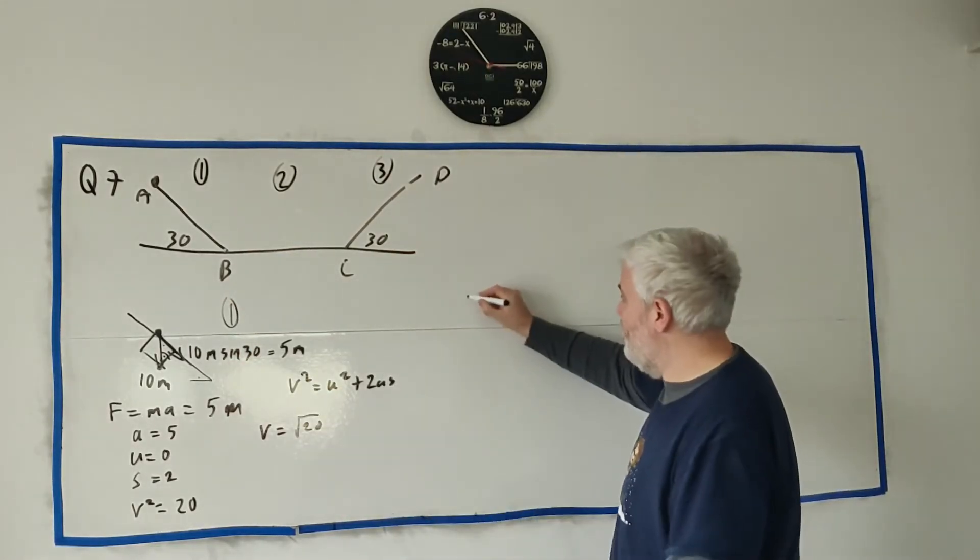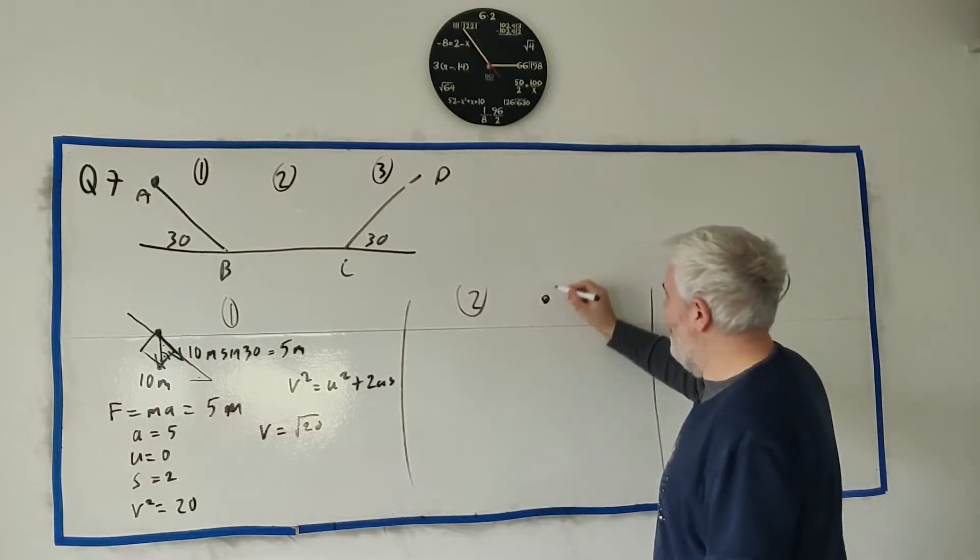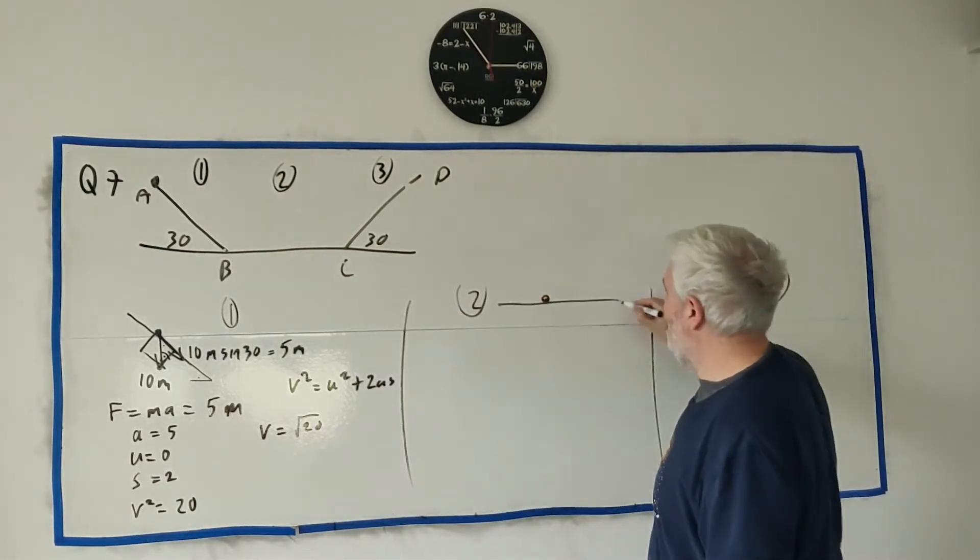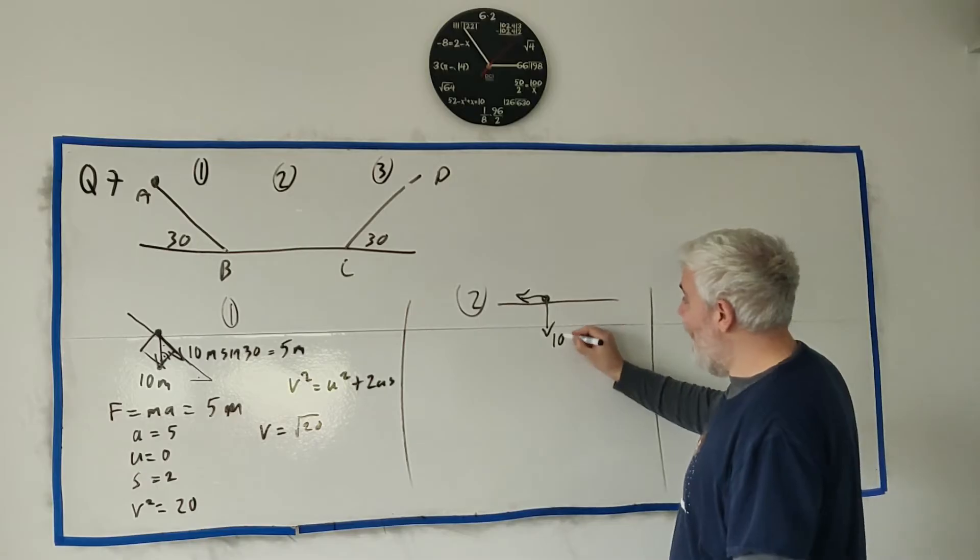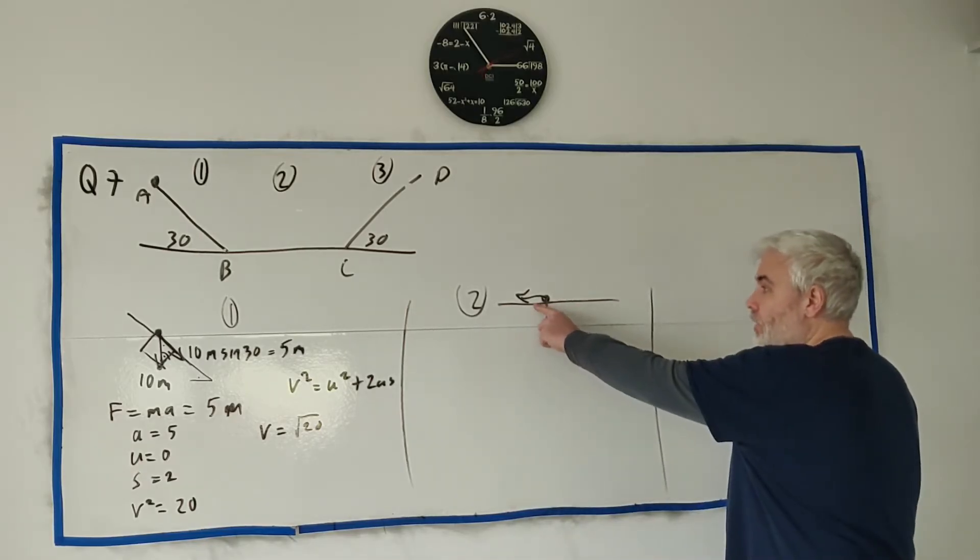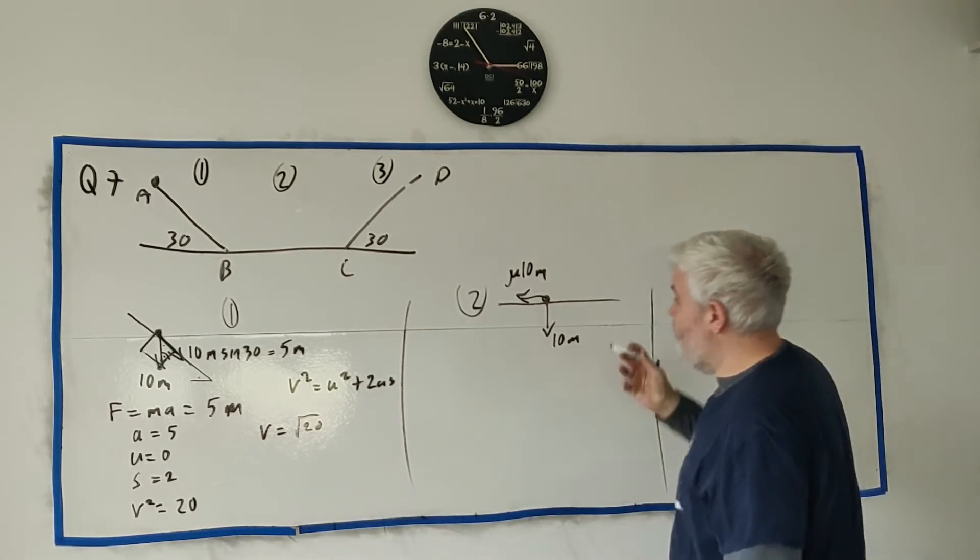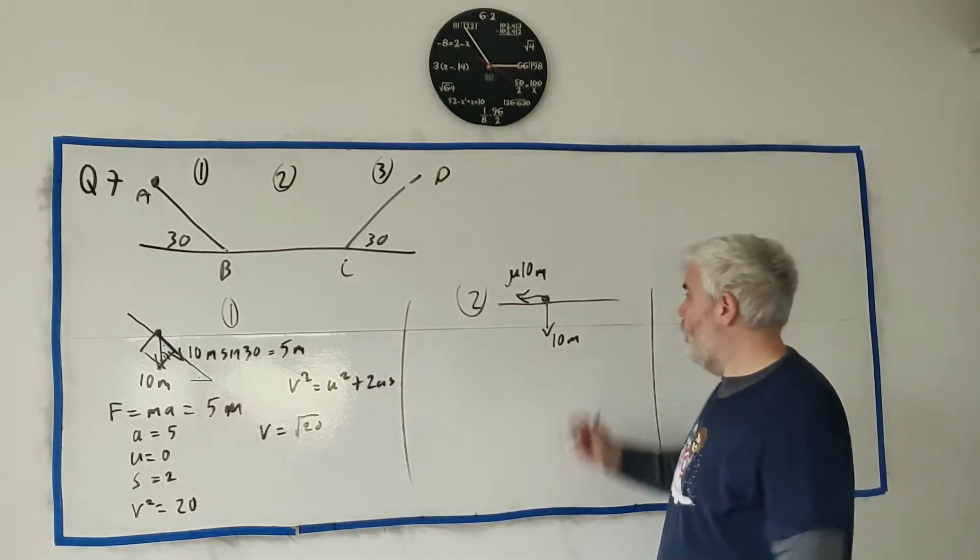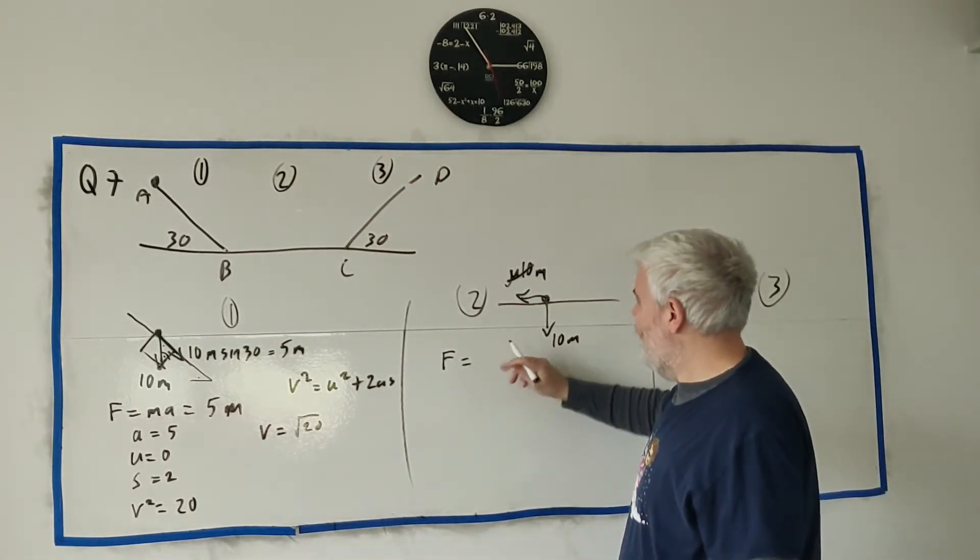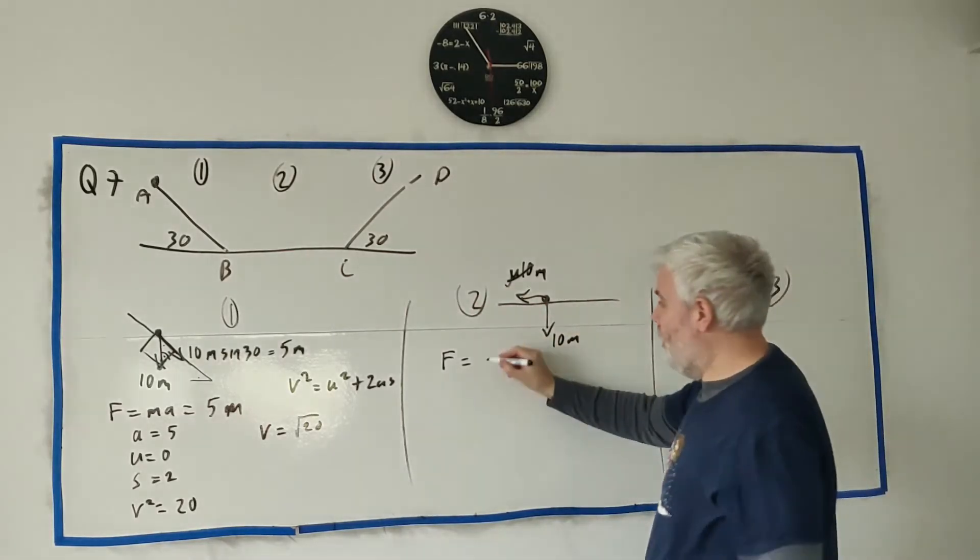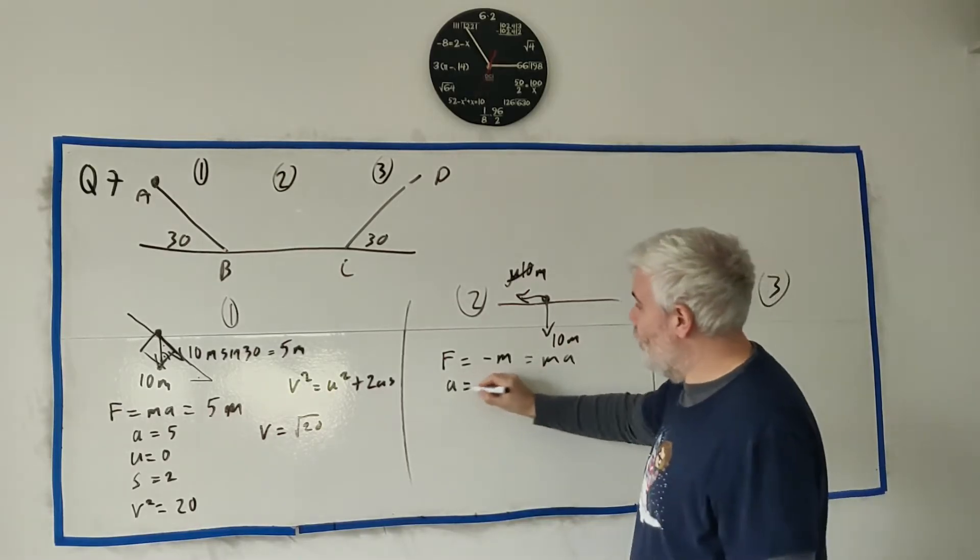That was world one. We continue into world two. We're coming across this flat plane this time. Gravity will push down 10m. Friction will push against it, which is mu times 10m. We know mu is 0.1, so that becomes m. The force going that way is m. The total force equals minus m because we're going that direction, which must equal ma. So a must equal minus 1.